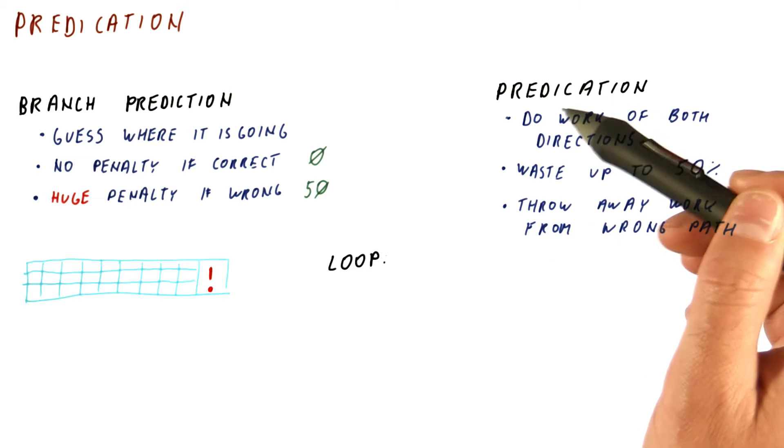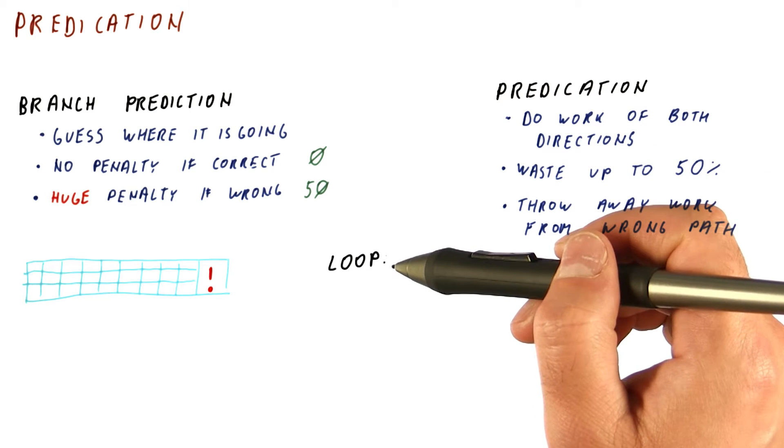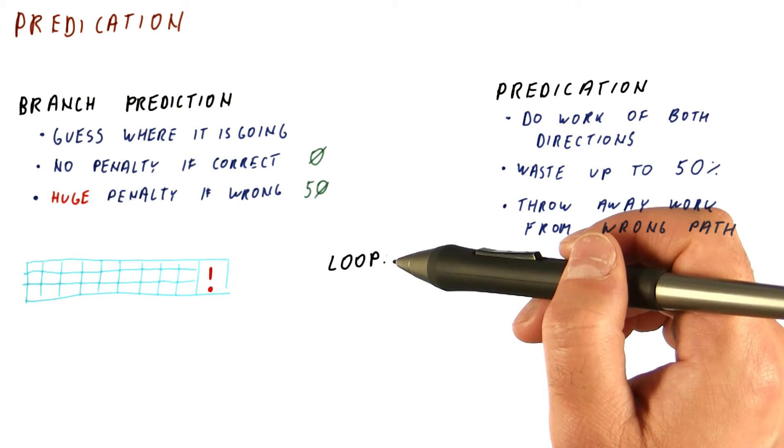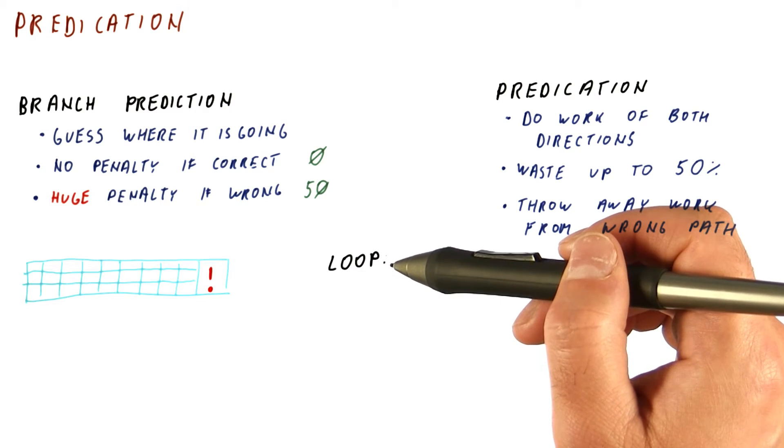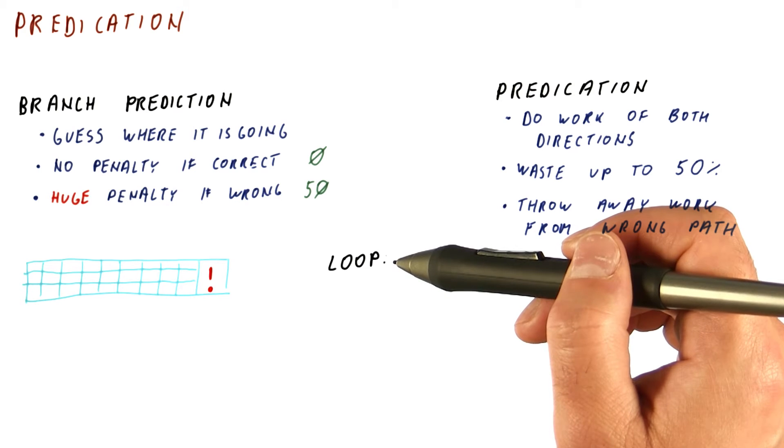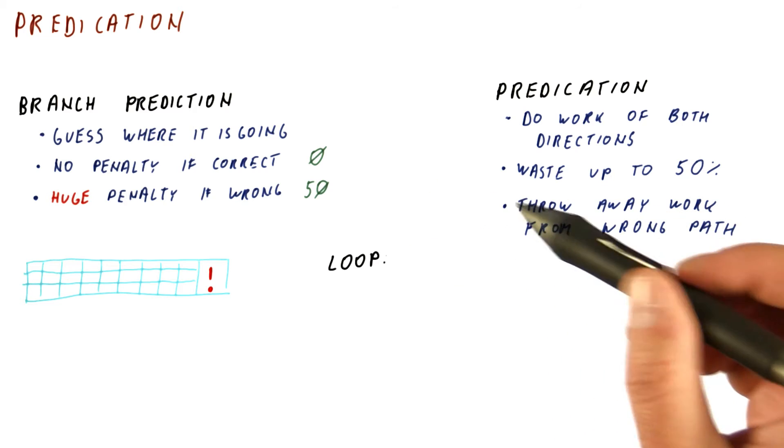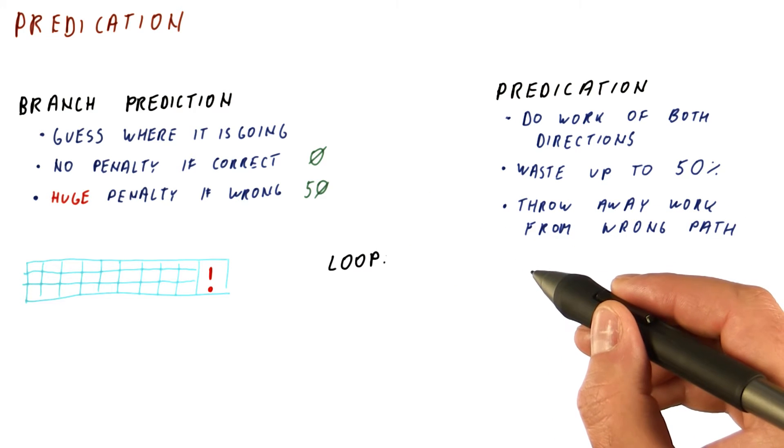Whereas with predication, in each iteration of the loop, we will be dividing our work into two. One is do the next iteration, the other one is do the work after the loop. So if we have a thousand iterations, very little of the work will end up being done correctly.